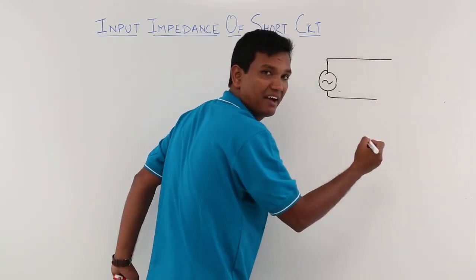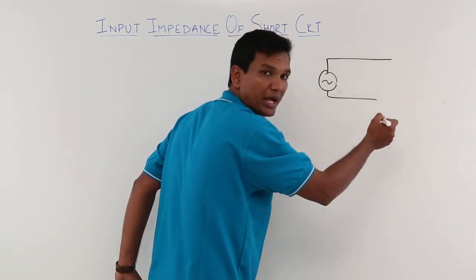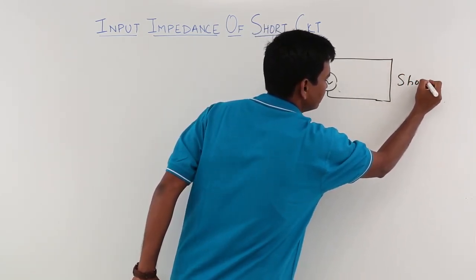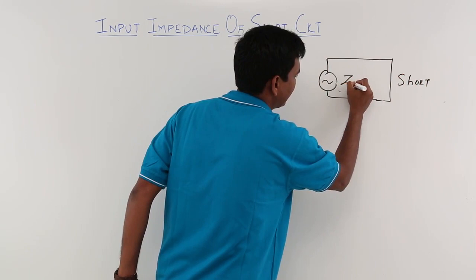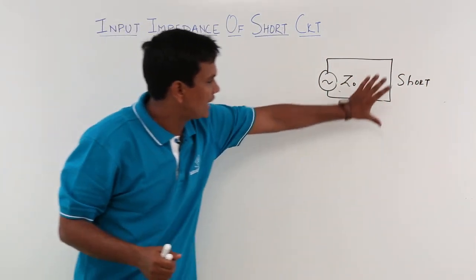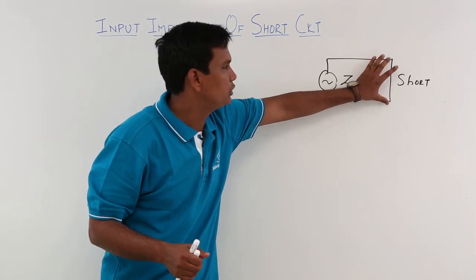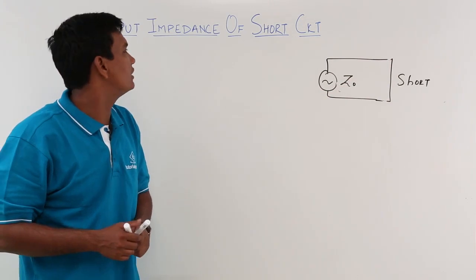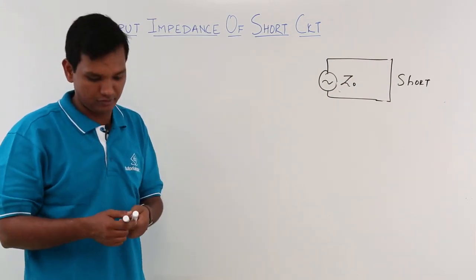Rather than having a load impedance, previously we used to have a ZL. What I am saying is that this would be nothing but your short, and it will have a characteristic impedance as Z₀. So if rather than having a load impedance, you are having that part itself is short circuited, and I have to find the input impedance of this circuit.